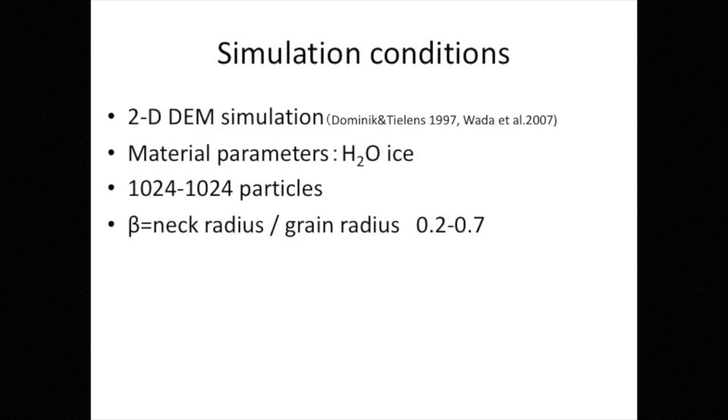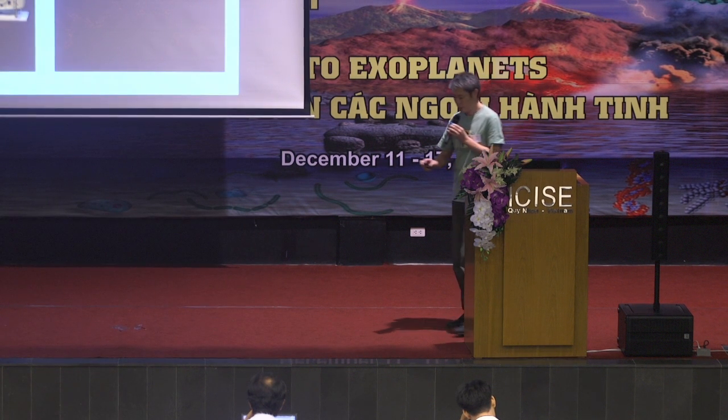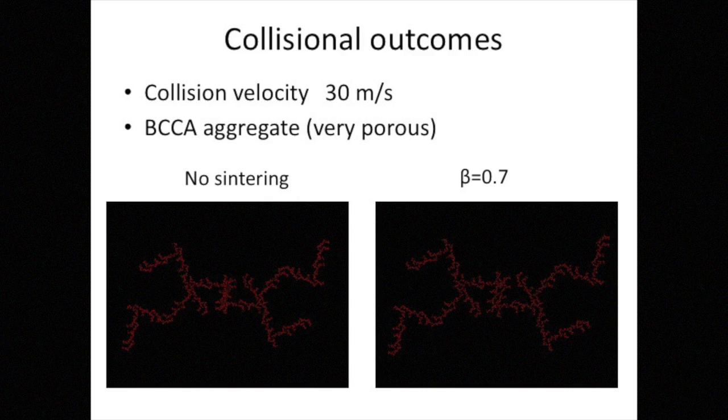But later I will show the result of 0.7. And these are the animations showing the result of collision between two icy aggregates. The left one is no sintering and the right one is sintered case. The collision velocity is 30 meters per second.